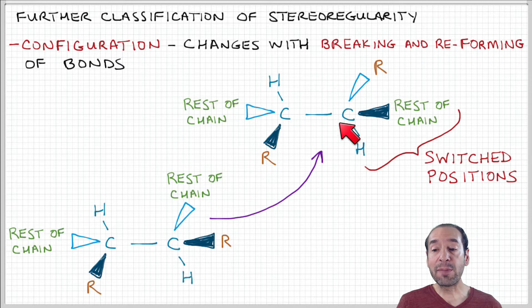So when I'm talking about two different species where these positions vary by switching or breaking and reforming of bonds, those are said to be different configurations of the same arrangement.